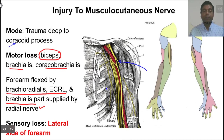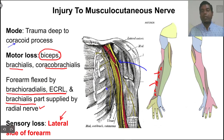The sensory loss will be seen on the lateral side of the forearm, because the musculocutaneous nerve, after supplying biceps and brachialis, continues as the lateral cutaneous nerve of the forearm, supplying this entire area. There will be sensory loss along the lateral border and the adjoining area.